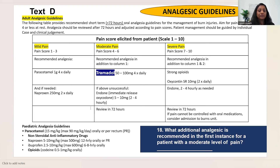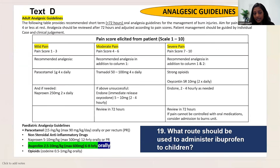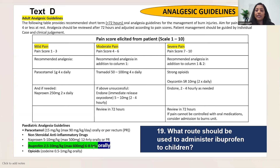Question 19: 'What route should be used to administer ibuprofen to children?' From Text D. The text states: 'ibuprofen 2.5–10 mg/kg, maximum 600 mg, 6–8 hourly, orally.' The answer is: orally — write 'orally,' not 'oral.'